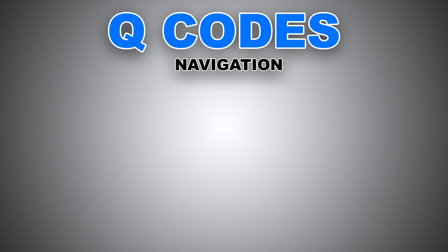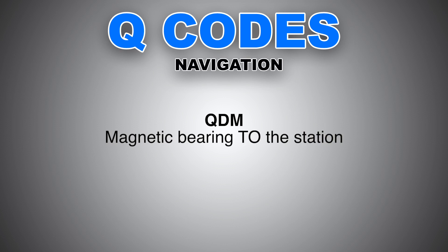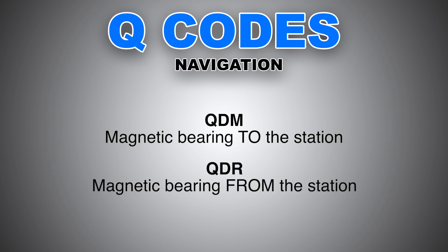First one is QDM. QDM is the magnetic bearing to the station. What do we mean by station? A station is a navigational facility — it could be a VOR, an NDB, an RNAV waypoint, or even an airfield. The reciprocal of QDM is QDR, the magnetic bearing from the station. So QDM is magnetic bearing to the station, and QDR is magnetic bearing from the station — or radial, which radiates away.